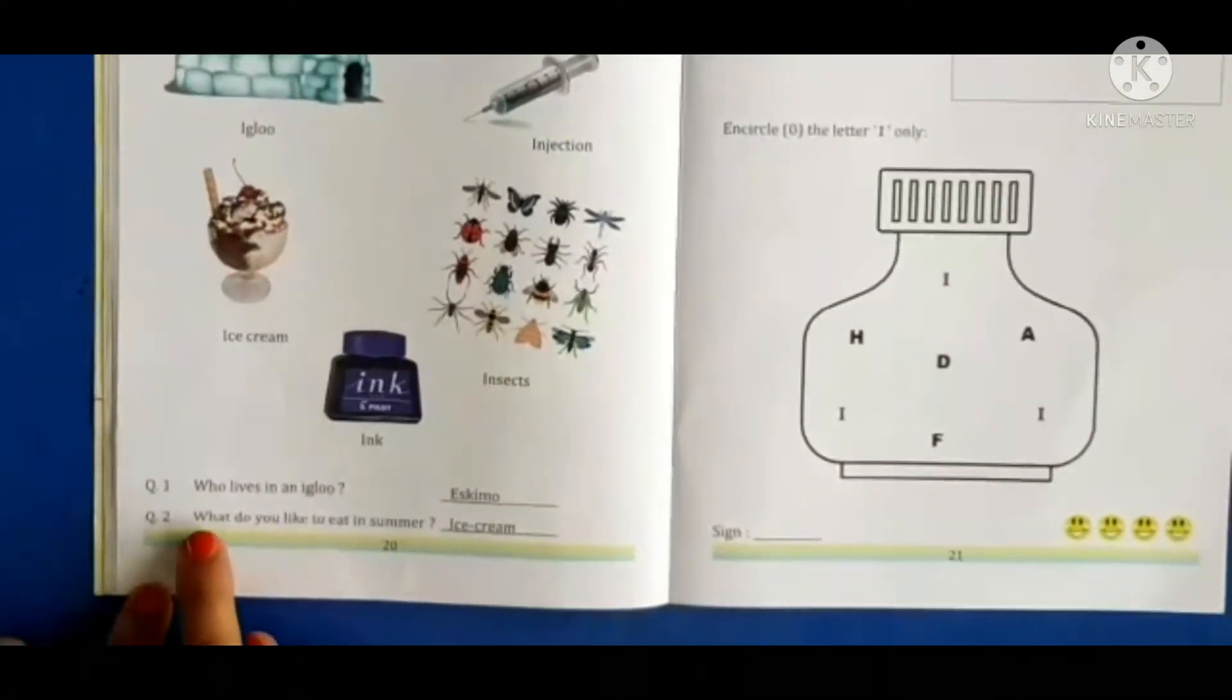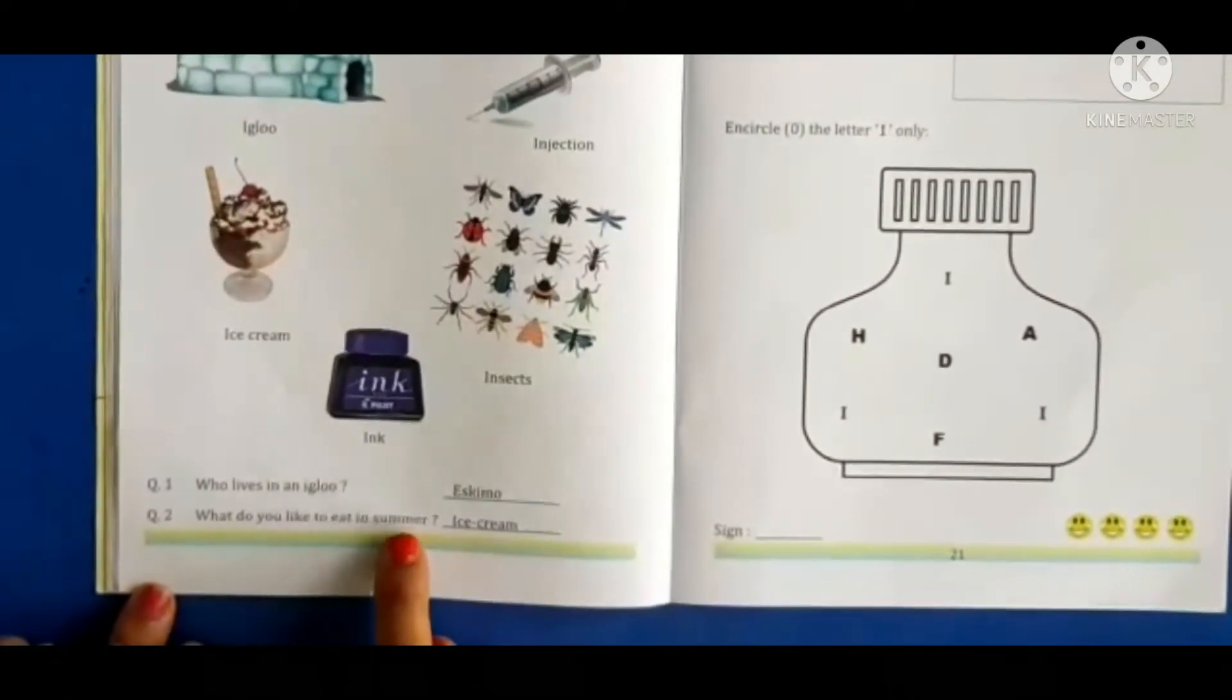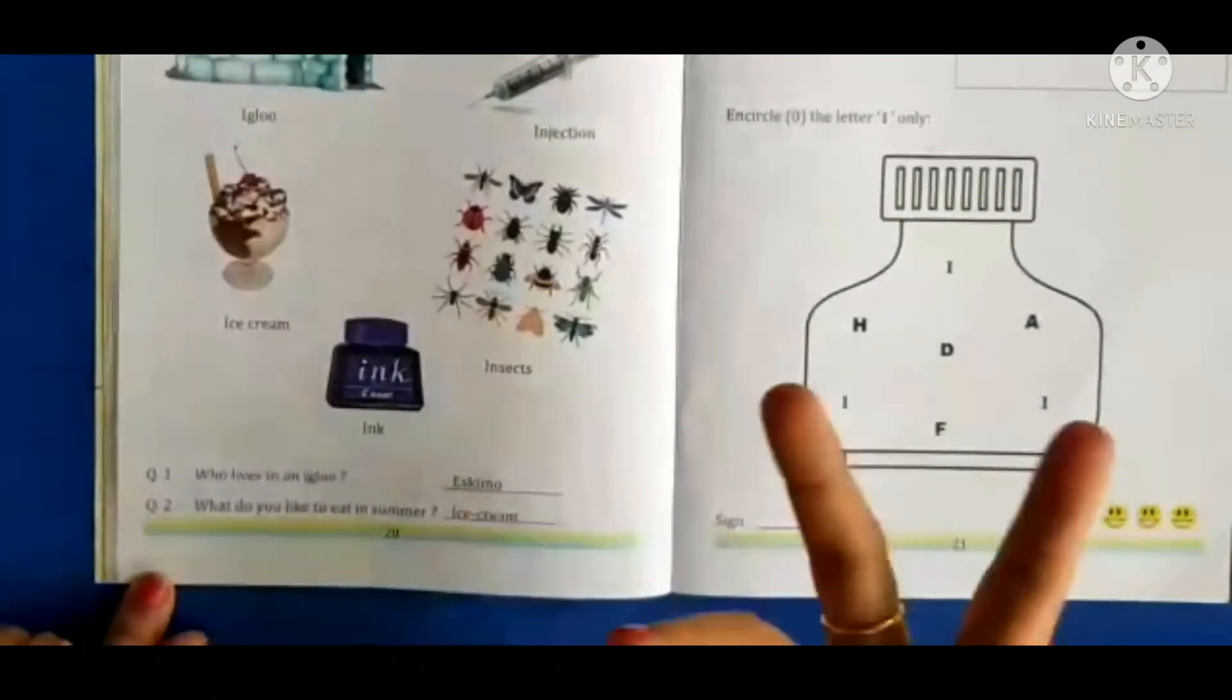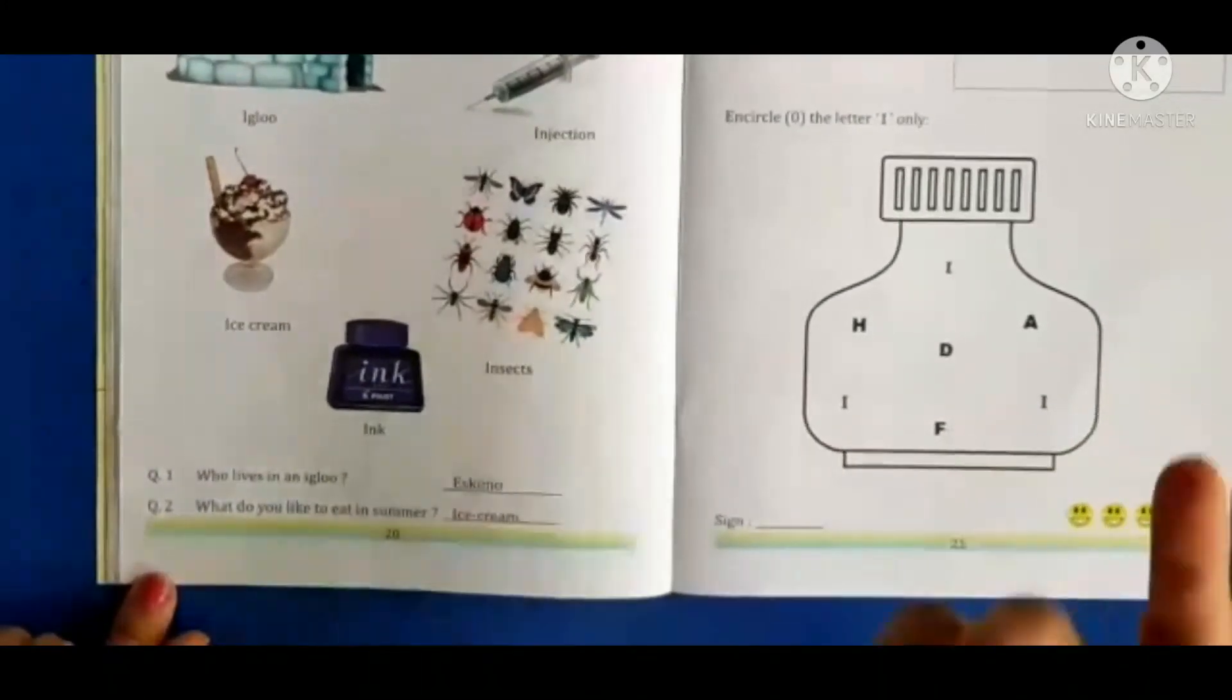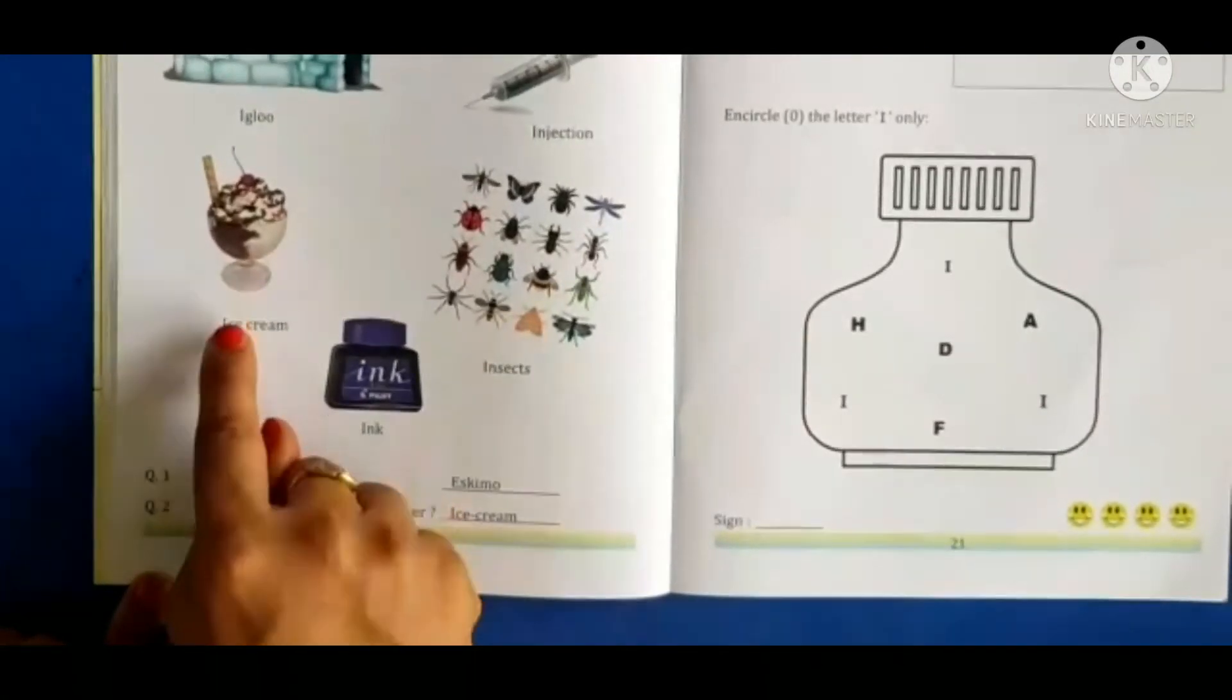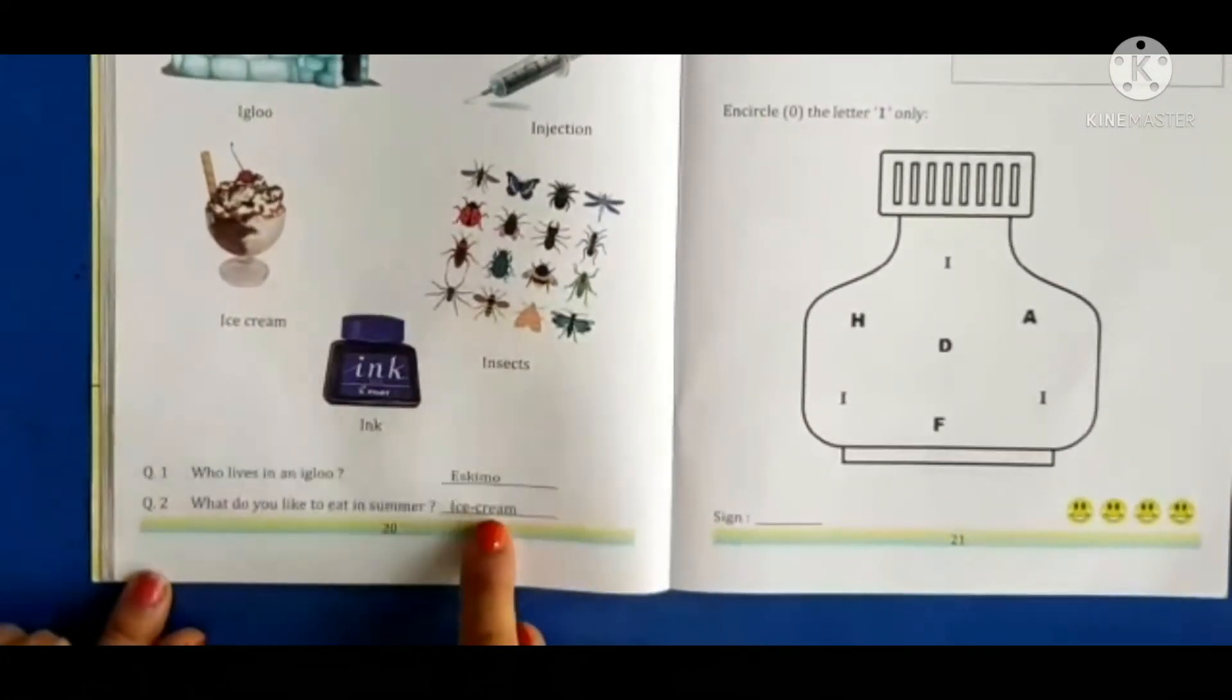Question 2: What do you like to eat in summer? Garmi mein bahut garmi hoti hai, toh thanda thanda kya khate hain hum? I for ice cream. I for ice cream.